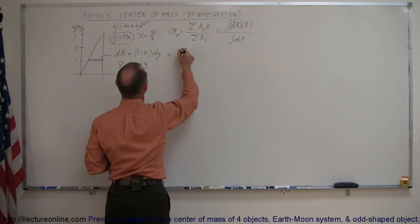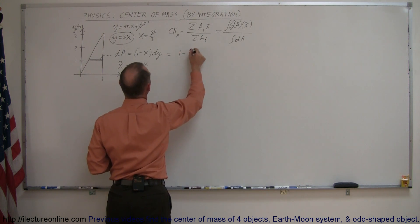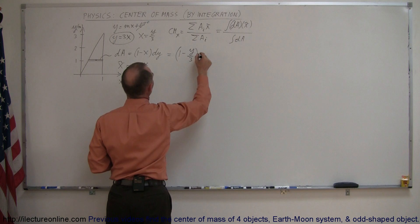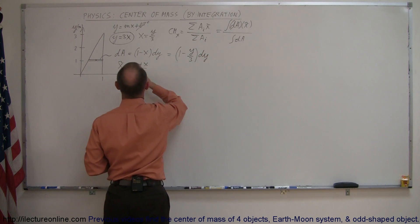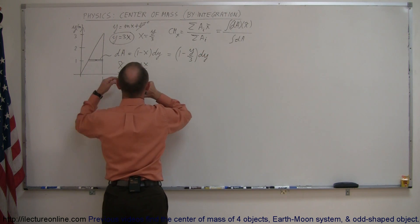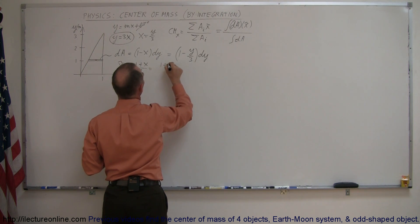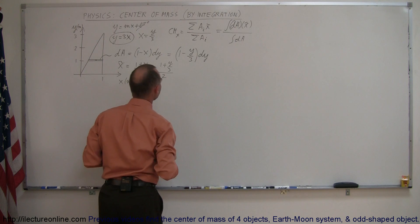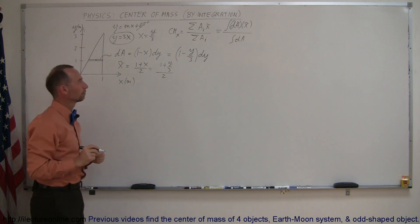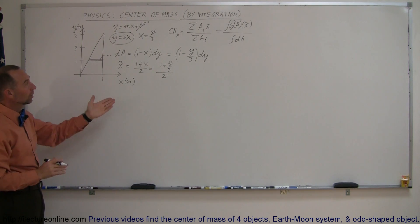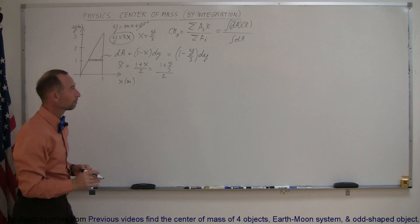So I can plug in y divided by 3 instead of x. A dA will be equal to 1 minus y over 3 times dy, and for the x-tilde — the x-coordinate of the center mass of the little line segment — it's going to be 1 plus y over 3 divided by 2. Now knowing that, we can plug that into our integration.